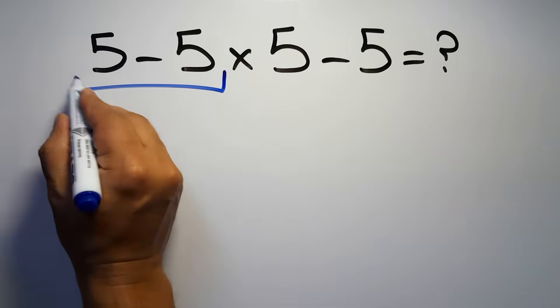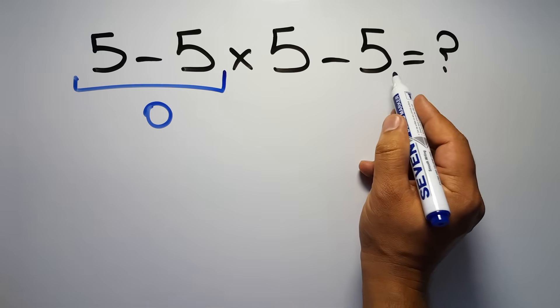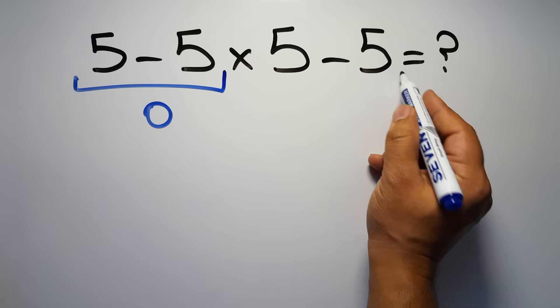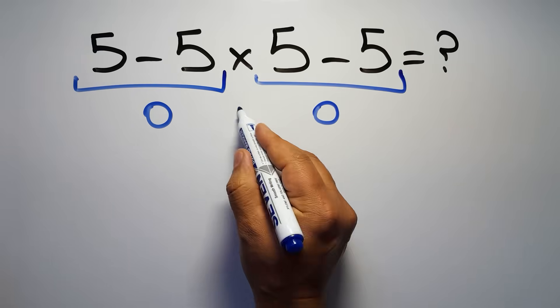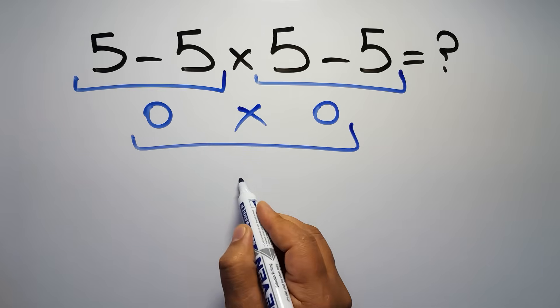5 minus 5 equals 0, and again here we have 5 minus 5, so 0 times 0, which equals 0. But this answer is not correct.